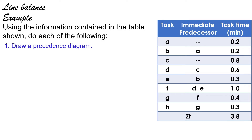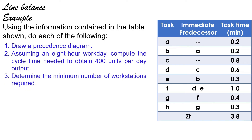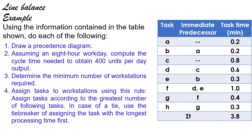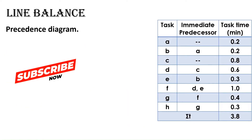1. Draw a precedence diagram. 2. Assuming an 8-hour workday, compute the cycle time needed to obtain 400 units per day output. 3. Determine the minimum number of workstations required. 4. Assign tasks to workstations using this rule: assign tasks according to the greatest number of following tasks. In case of a tie, use the tiebreaker of assigning the task with the longest processing time first. 5. Compute the resulting percent idle time and efficiency of the system.